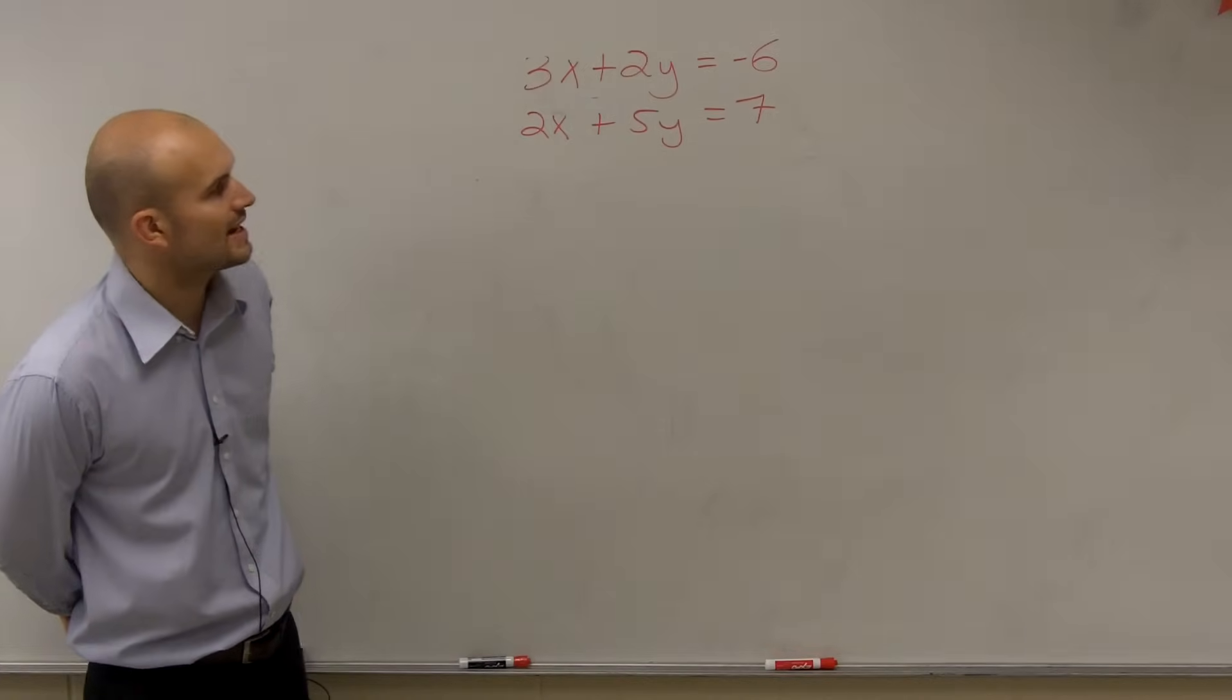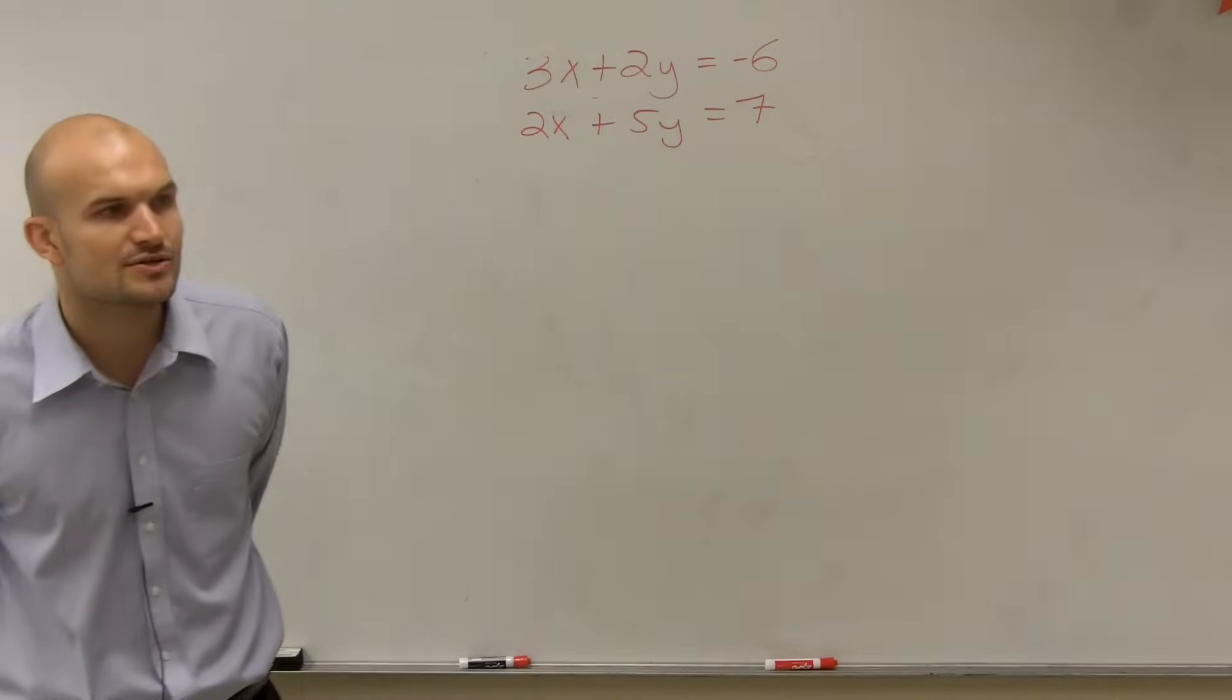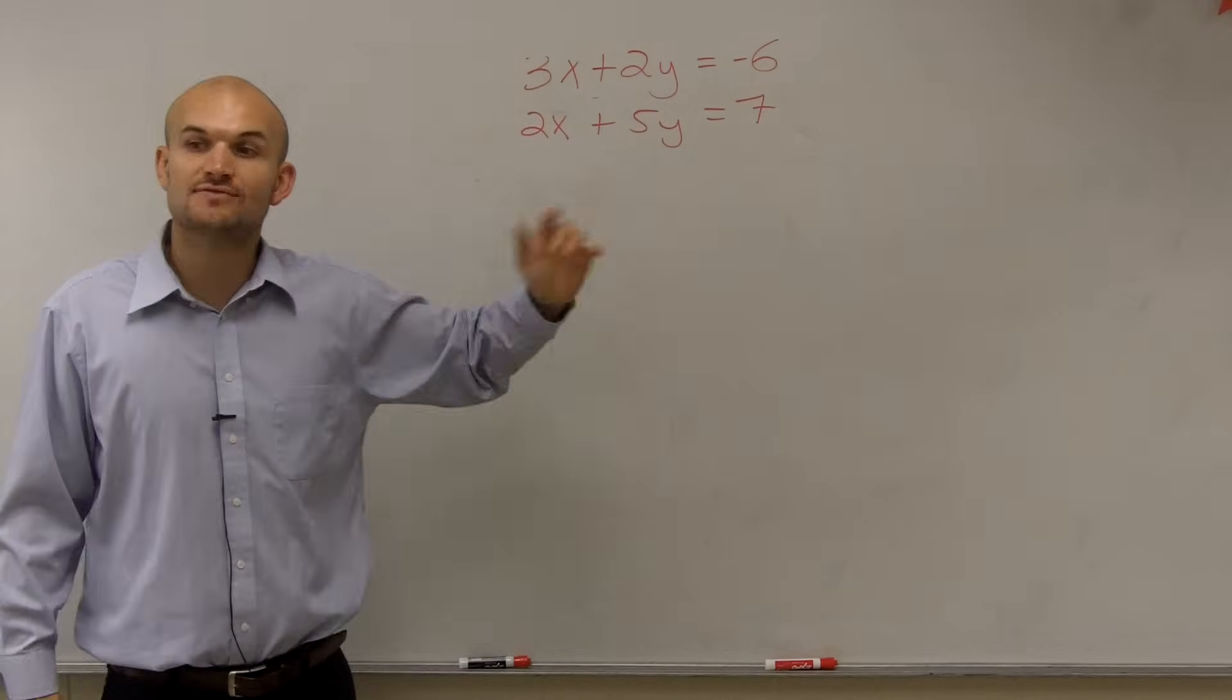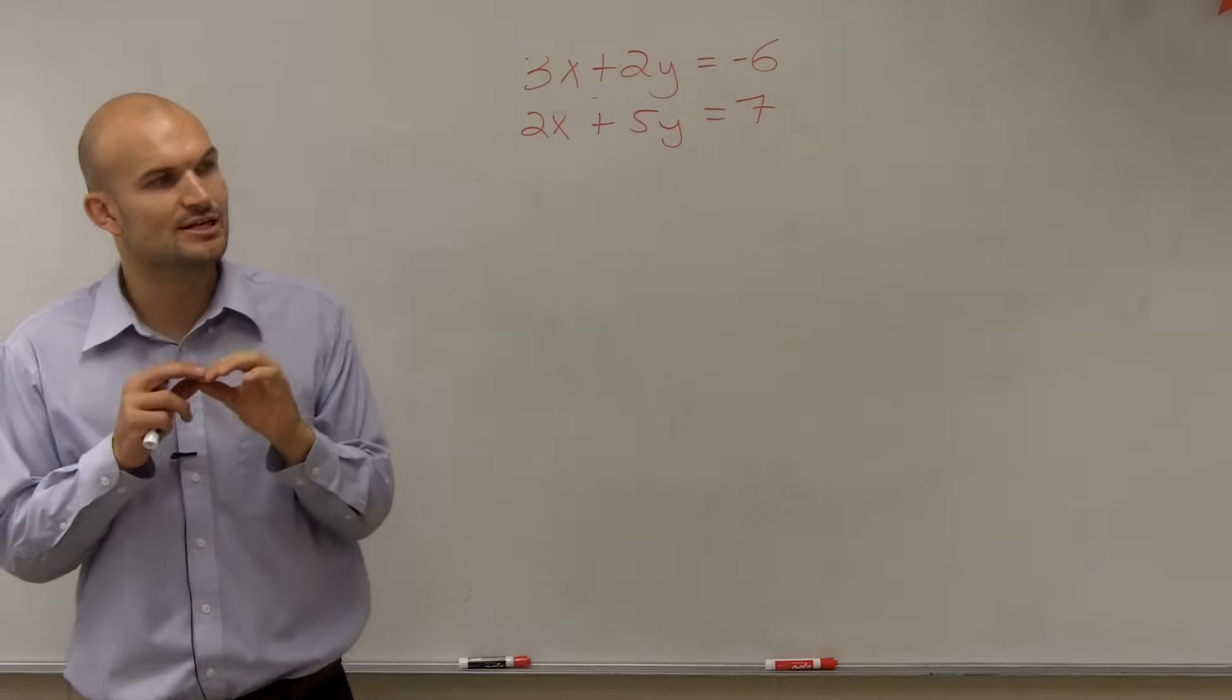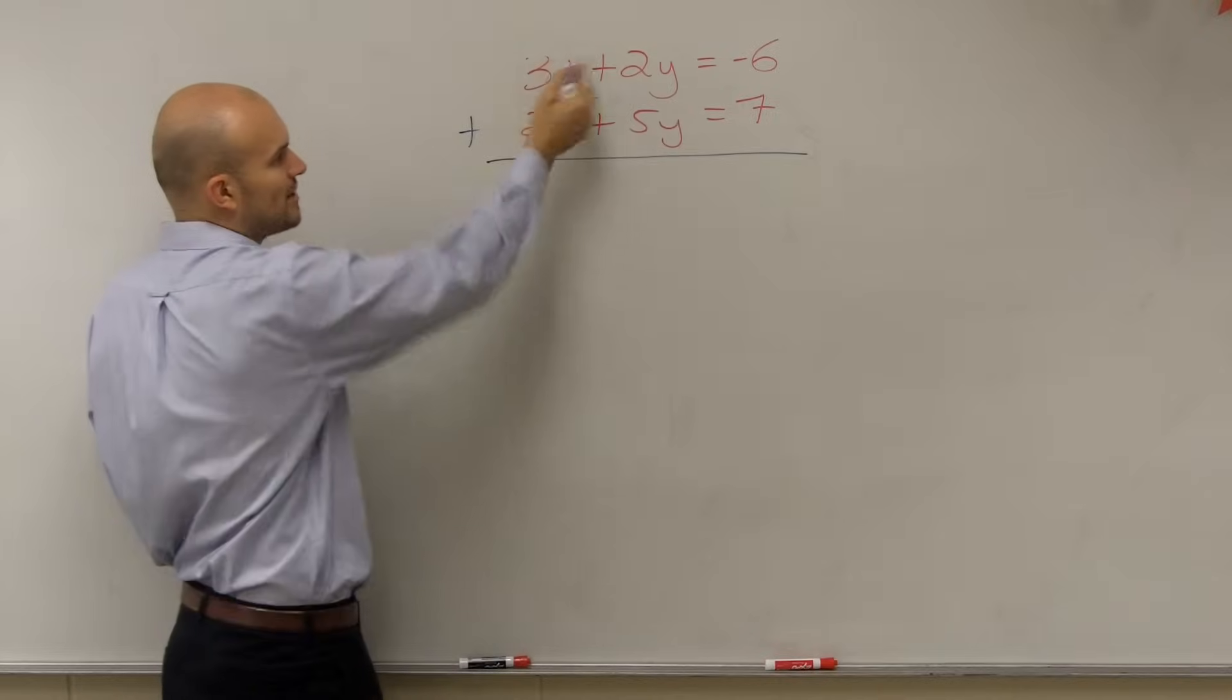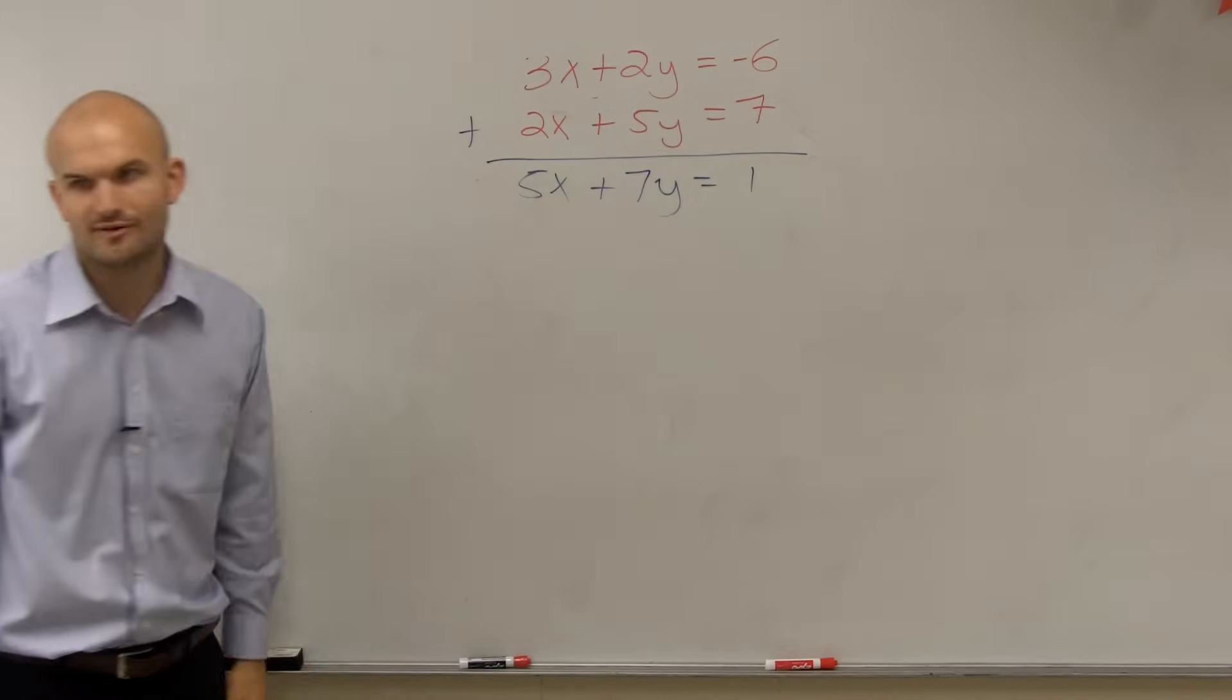So here I have 3x plus 2y equals negative 6, and 2x plus 5y equals 7. So when you guys look at your graphic organizer, what they do is they say, if I can add these two equations up together, where one, where they have the same coefficient, but one's positive and one's negative, then I'll have 0. When I add them up together, I'll get a 0x or a 0y, which will eliminate one of the variables. So first of all, let's look at this. If I was to add these two up, do I eliminate a variable? 3x plus 2x is 5x, 2y plus 5y is 7y equals 1. So did I eliminate a variable? No.